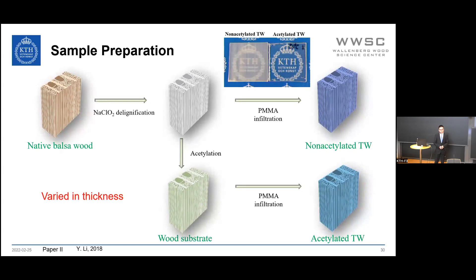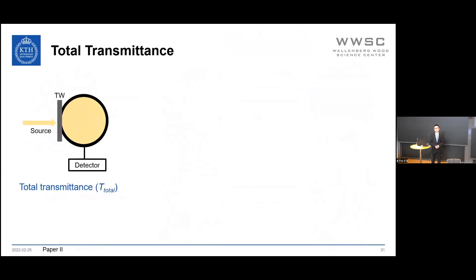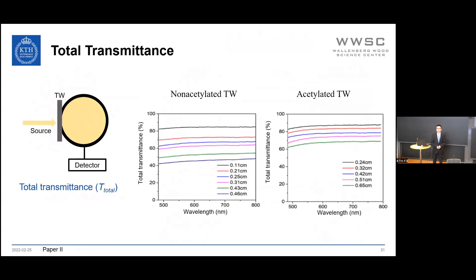All samples are varied in thickness. Total transmittance is measured using an integrating sphere, and data for both materials are shown. With increasing sample thickness, total transmittance decreases for both cases. To describe the thickness–total transmittance relationship, we propose the photon diffusion equation for transparent wood.